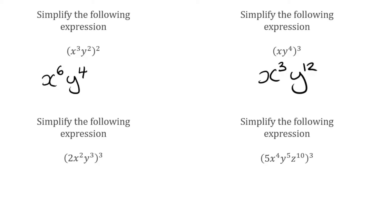These last couple of questions are similar but also have a coefficient included. For this first one, we've got 2x squared y cubed, all cubed. We need to apply that outer power of 3 to all terms inside the bracket. 2 raised to the power of 3 is 2 cubed, which is 8. x squared raised to the power of 3: multiplying the indices, 2 times 3 is 6, so x to the power of 6. And y cubed raised to the power of 3: 3 times 3 is 9, so y to the power of 9. Our final expression is 8x to the 6 y to the 9.